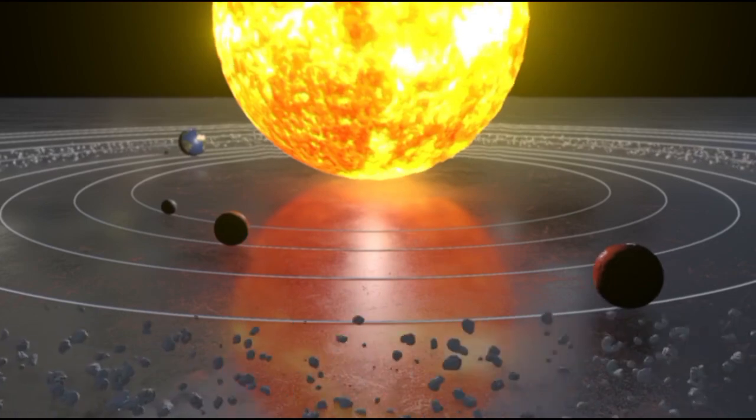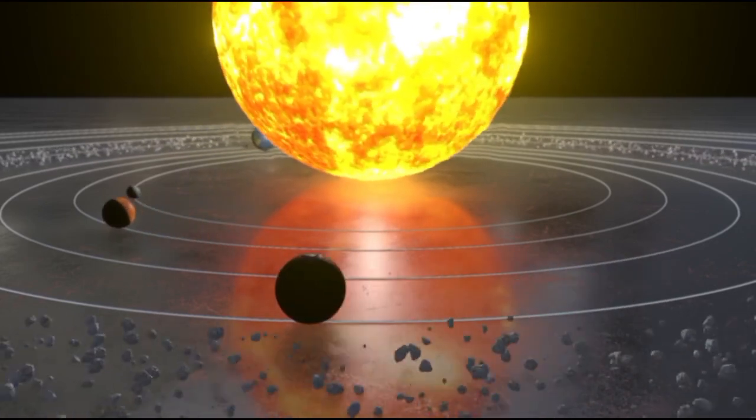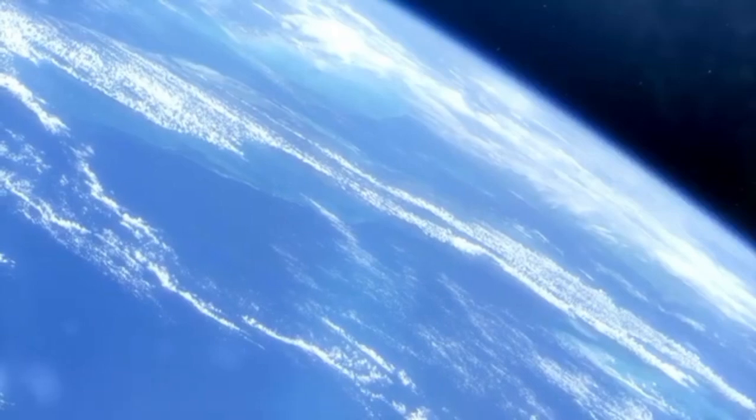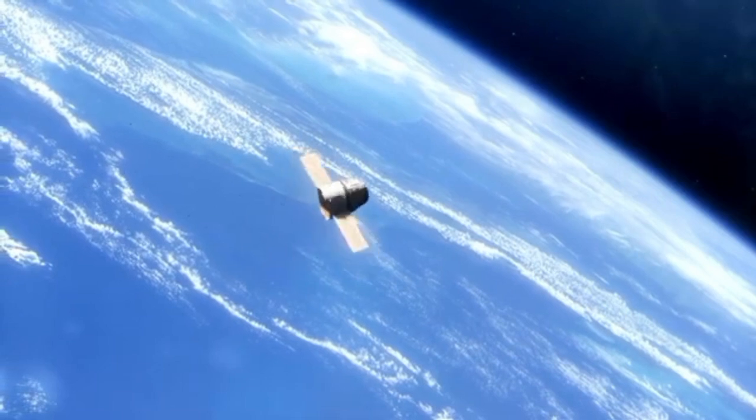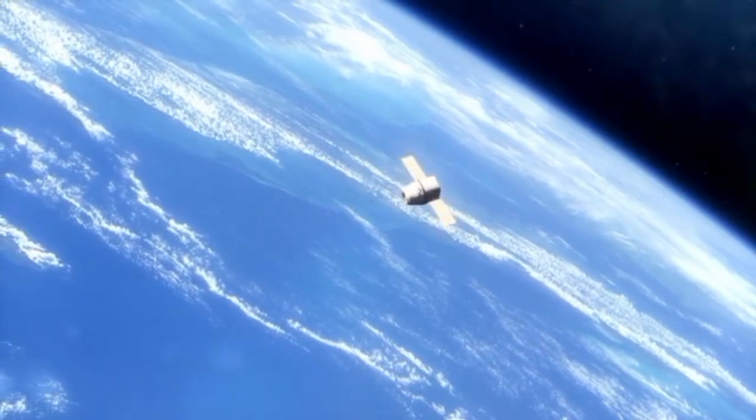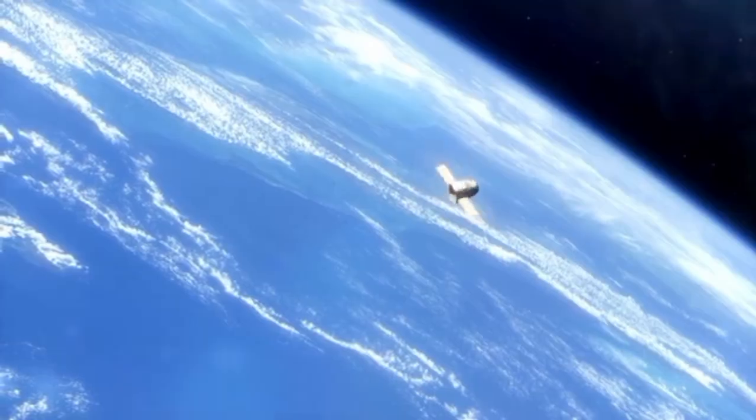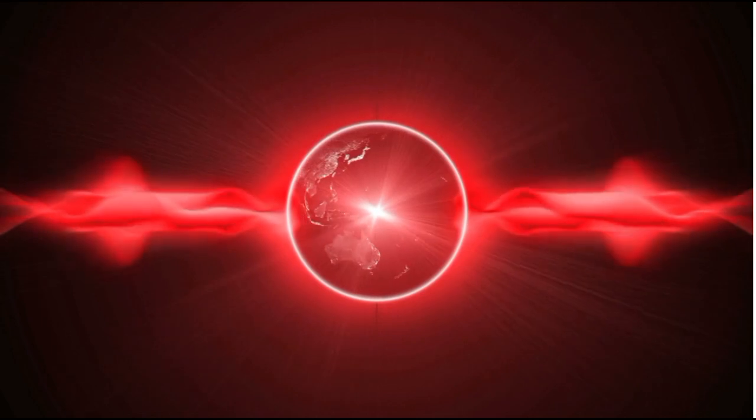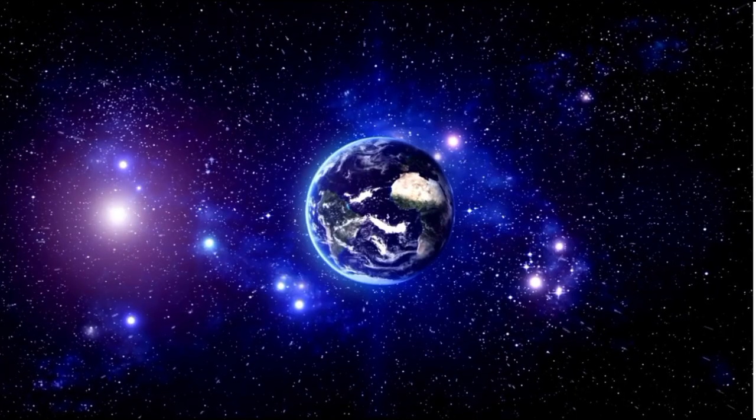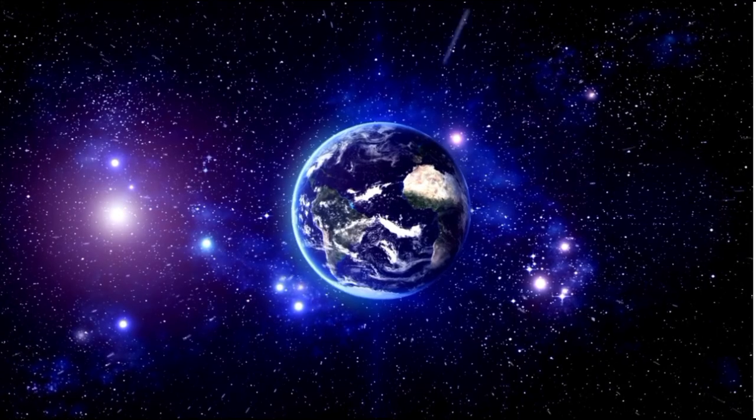Proxima b's allure isn't solely based on its proximity to Earth. Astronomers believe that it may not only resemble Earth, but could even be Earth's twin, Earth 2.0, positioned in the so-called habitable zone of its star where conditions are just right, not too hot, not too cold.